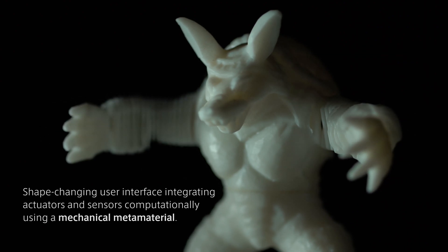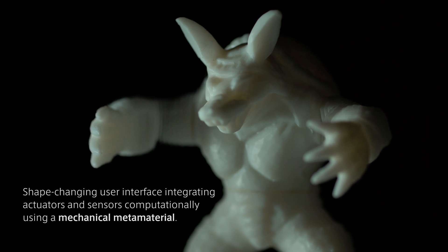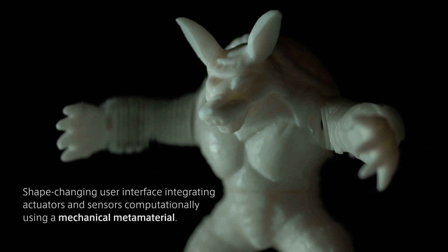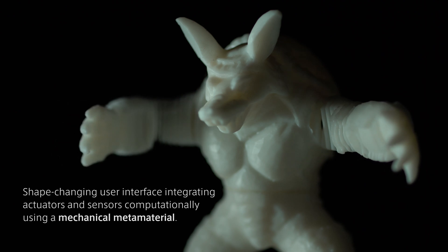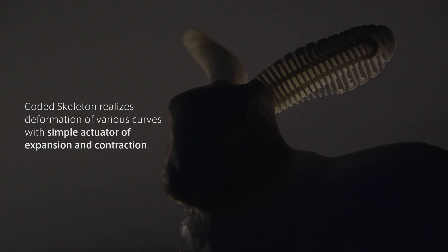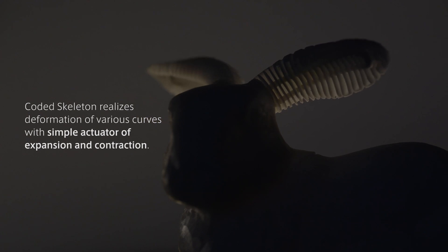In this paper, we propose the design method of a novel shape-changing user interface integrating actuators and sensors computationally using a mechanical metamaterial called Coded Skeleton. Mechanical metamaterials used in Coded Skeleton are flexible in one deformation mode but stiff in the other modes.